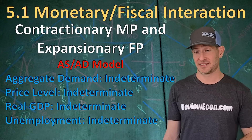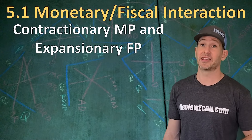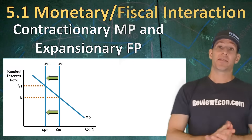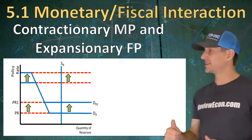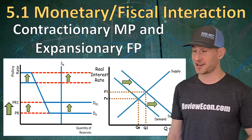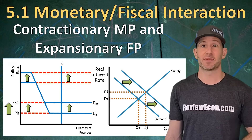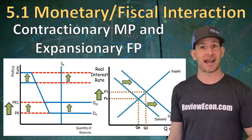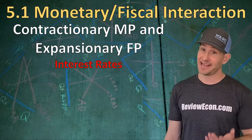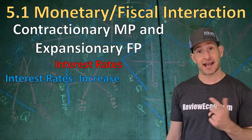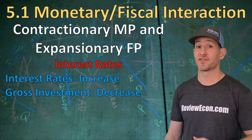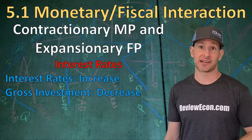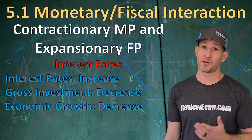The unemployment rate will be indeterminate as well — we don't know if it's increasing or decreasing. Now here's the impact of those contradictory policies on the interest rate. Contractionary monetary policy is definitely going to increase interest rates in the money market — both with scarce and ample reserves, we see an increase in the policy rate. On the loanable funds market, we're going to see an increase in the demand for loanable funds, because the government must borrow more money for that expansionary fiscal policy. Both actions are increasing the interest rate, so the interest rate is for sure going to increase. Gross investment is for sure going to decrease, and as a result there's going to be a decrease in the growth rate within this economy.